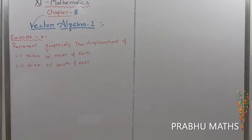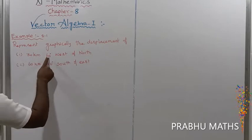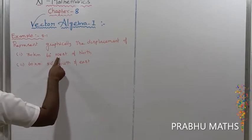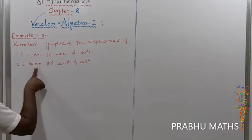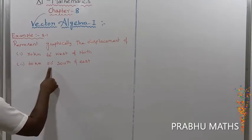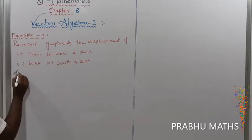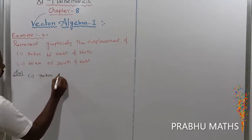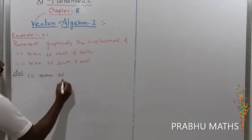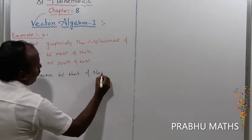Example 8.1: Represent graphically the displacement. First displacement is 30 km, 60 degrees west of north. Second displacement is 60 km, 50 degrees south of east. So graphically represent this data. First of all, the first displacement: 30 km, 60 degrees west of north.